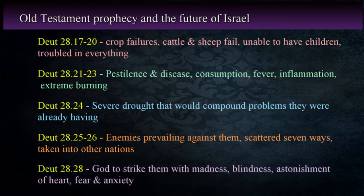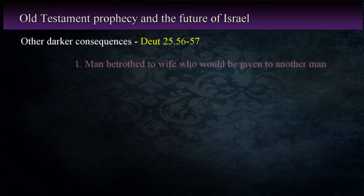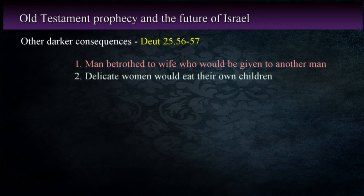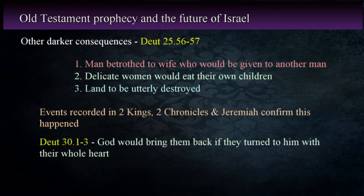Deuteronomy 28:28: the Lord would also strike them with madness, blindness, and astonishment of heart, so they would be filled with fear and anxiety. These are only a few of the things that Moses described — there are many more that are darker, such as a man being betrothed to a wife who would be given to another man, and delicate women winding up eating their own children because of starvation in Deuteronomy 28:56-57, and the land being utterly destroyed because of their sin. These events are recorded in the books of 2 Kings, 2 Chronicles, and Jeremiah, and descriptions in these books match the predictions that Moses detailed. But there was also a ray of hope: God would bring them back to the land and restore them if they turned to him with their heart and repented, in Deuteronomy 30:1-3.